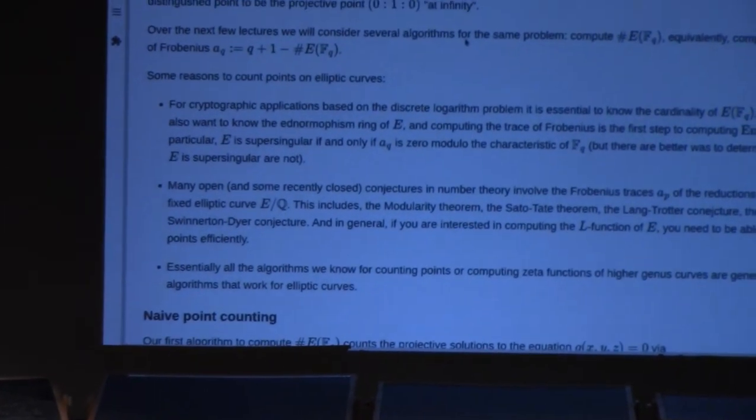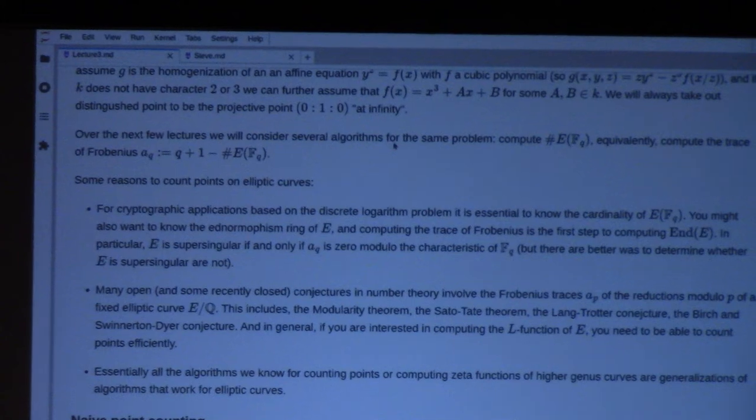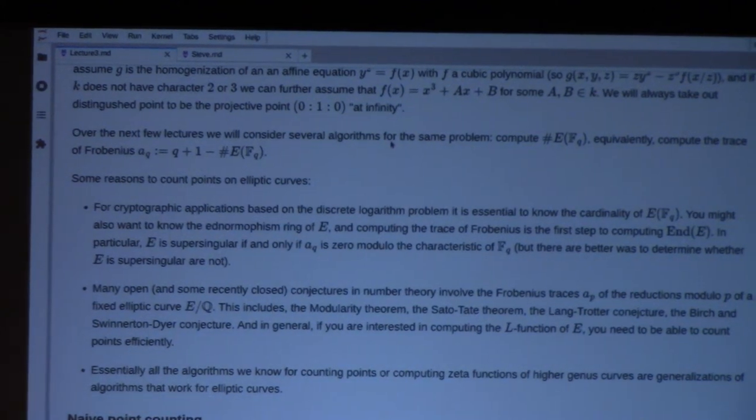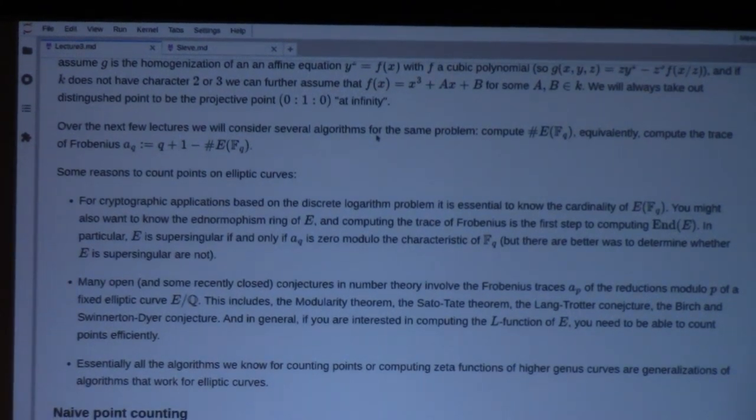The last reason why you might be interested, and this is especially relevant for those who are interested in the course David Harvey is going to be teaching on computing zeta functions in week three, basically all the algorithms we know for counting points or more generally computing zeta functions of higher genus curves are generalizations of algorithms for elliptic curves. It's very useful to study them in the simplest non-trivial setting, which is an elliptic curve. I mean, you might say, why go to genus one? Why not count points on genus zero? Unfortunately, or fortunately, depending on your perspective, counting points on genus zero curves is very easy. They're always q plus one.